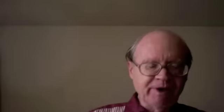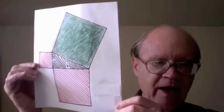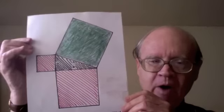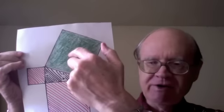What that means geometrically is this. If we have that right triangle, any right triangle, and we build a square on each of its three sides, we have this red square and this red square and this green square.